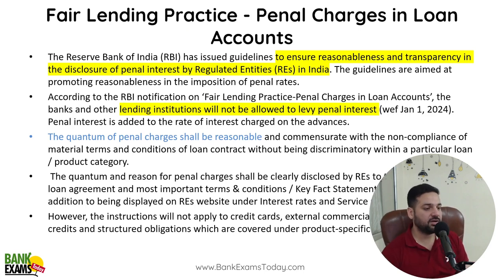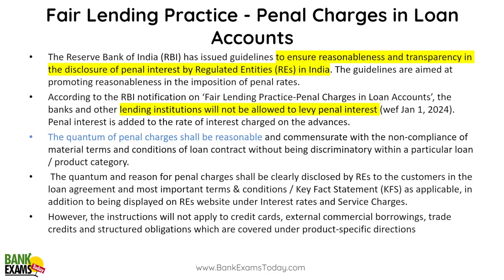Fair lending practices. Banks were previously charging penal interest rates. For example, you took a loan at 12% and if you missed one or two installments, your interest rate was raised to 13%. RBI said banks cannot do that. You said 12%, keep it at 12% — the interest rate will not increase. You can levy charges — penalty in the form of charges — but those charges should be transparent and reasonable. They need to be mentioned in the loan agreement and on the bank's website.